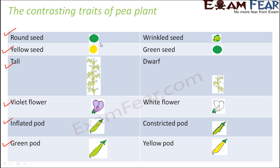So now you understand how this is going to help. While experimenting, Mendel could use these contrasting traits to check that his experiments were going in the right direction. He could cross a round seed with a wrinkled seed to see what the output is. Similarly, he could perform the same experiment using other traits like the colour of the flower, and then see if the outputs are in the same lines with each other. So these were some of the contrasting traits of the pea plant which Mendel used for his experimentation.